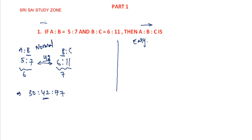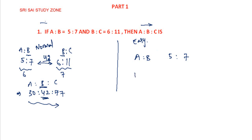So A is to B is to C value. A is to B is 5 is to 7. B is to C value gives us the combined ratio A is to B is to C.